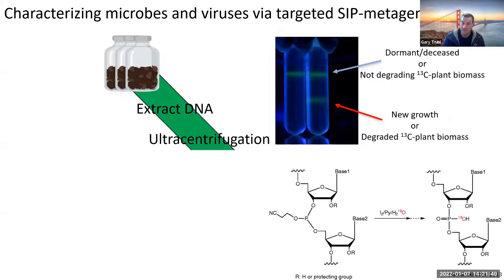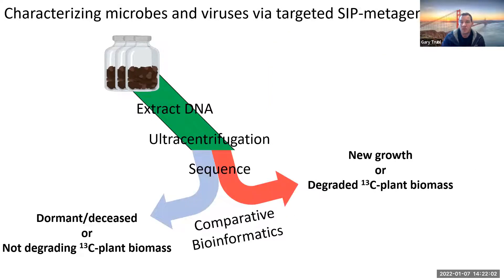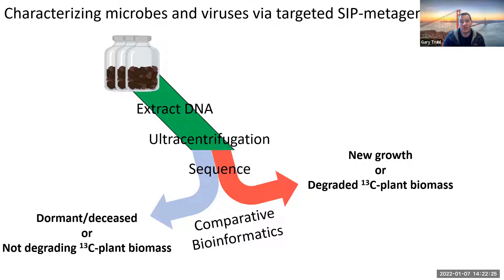The ones that incorporated the heavier isotope are in the denser fractions, and we can physically separate and sequence them separately and compare. There are differences - organisms that are GC-rich can make DNA more dense, so we take many fractions and compare. It's important to always sequence both the light and the heavy fractions. This gives us the genetic repertoire of everything going on, and allows us a control to compare differences in growth and changes in the communities.